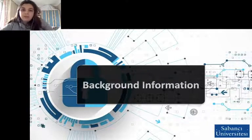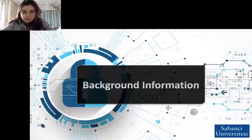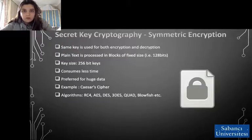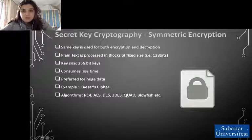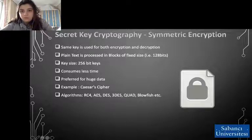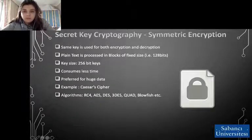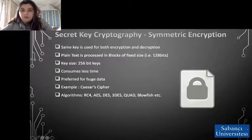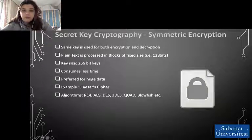Now that we know some basics about cryptography and its usage, we can go into some details. First, we have secret key cryptography, which is symmetric encryption. Symmetric encryption is a type of encryption where only one key — a secret key — is used to both encrypt and decrypt electronic information. The entities communicating via symmetric encryption must exchange the key so that it can be used in the decryption process. By using symmetric encryption algorithms, data is converted to a form that cannot be understood by anyone who does not possess the secret key to decrypt it.